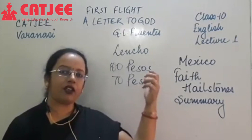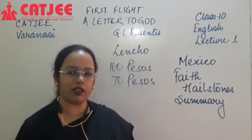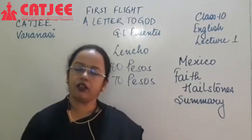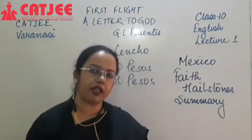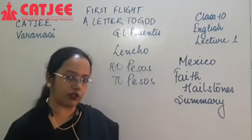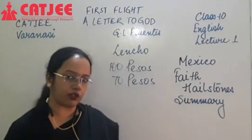And that is the story summary of 'A Letter to God.' It's a really nice little story. Now let's go to the story analysis. The difficult words are given in your NCRT English book on the right side of every page. Now, there are three important things to talk about in this story's analysis.